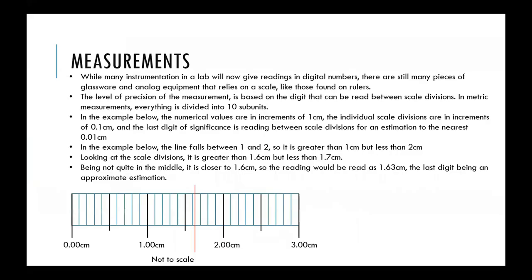While many times these pieces of equipment have a digital readout where you can see the numerical value of the measurement, a lot of older pieces of equipment or general pieces of glassware do not have a digital readout, and these pieces of equipment need to be measured using a scale. Just like using a ruler, a scale will have individual numerical values separated by subunit sections.